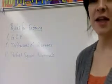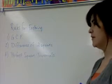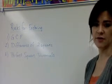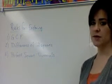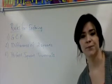I would first like to review with you rules of factoring. The GCF is your first rule of factoring. Difference of two squares and perfect square trinomial. Let's write some examples of each one, okay?